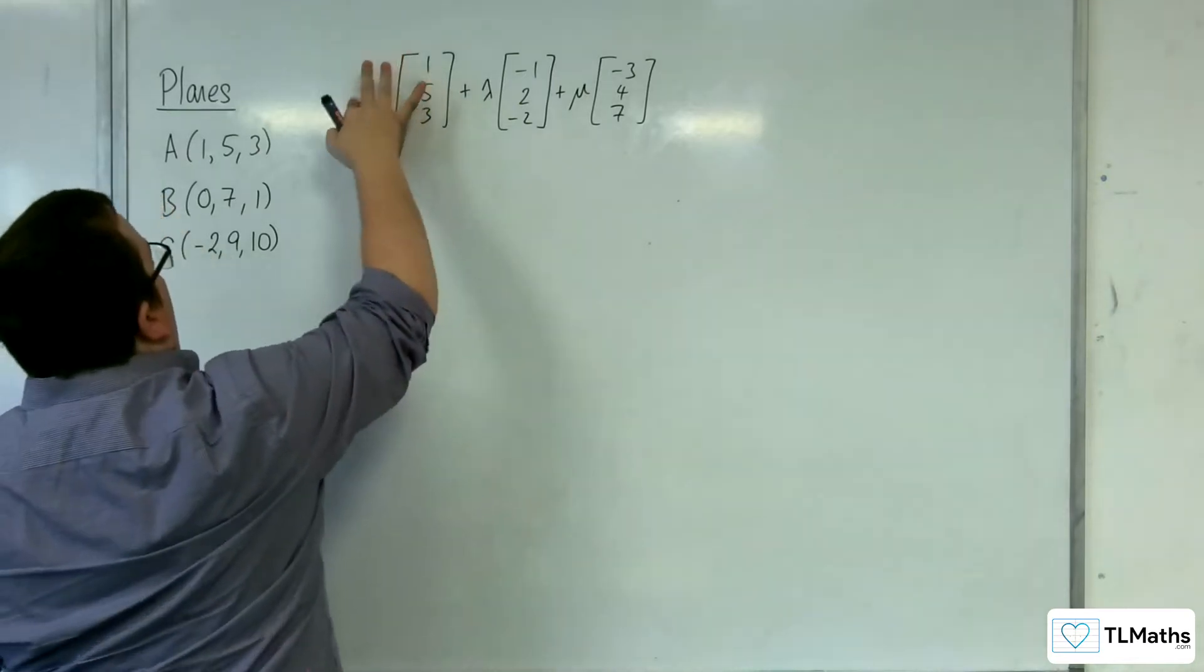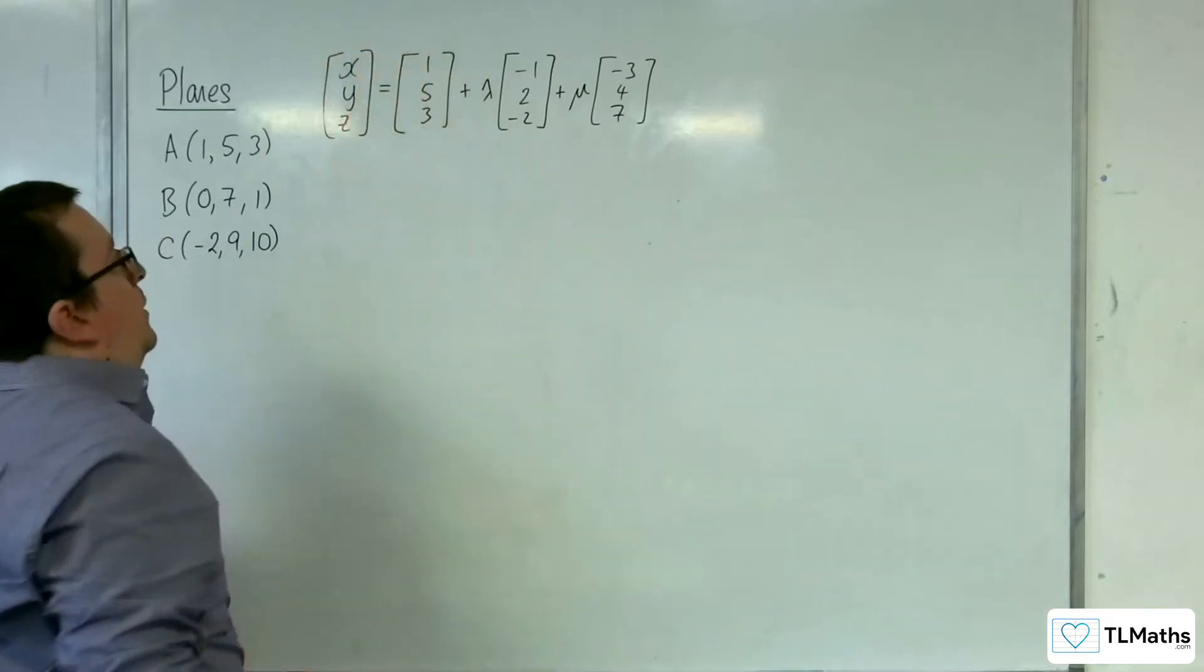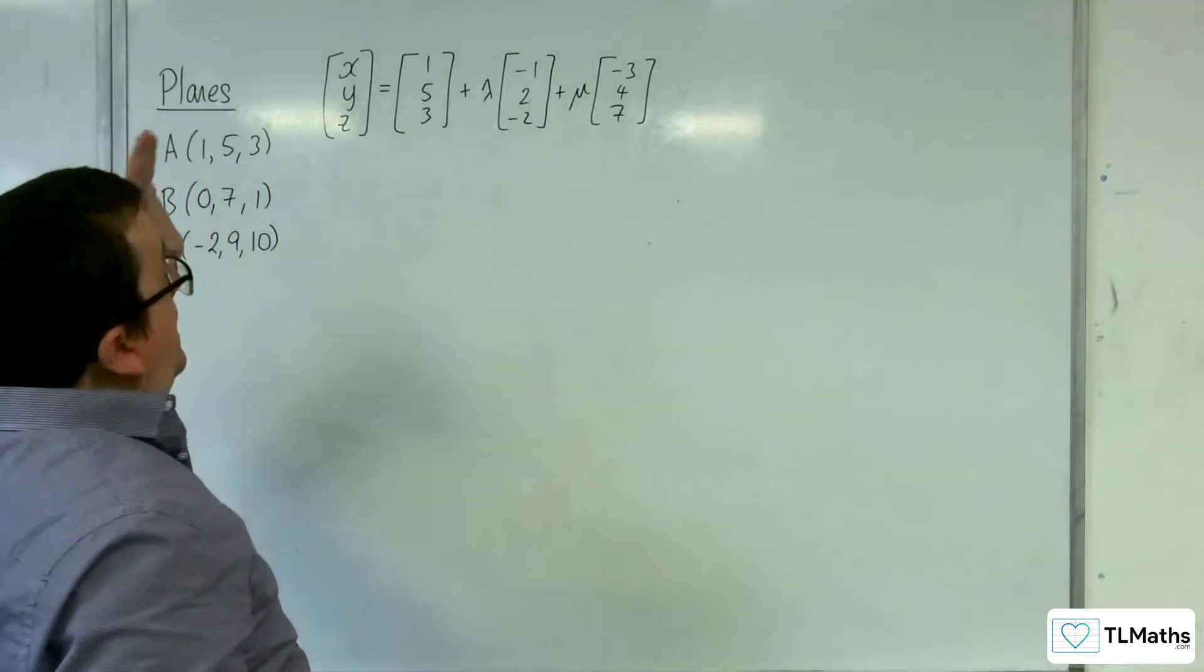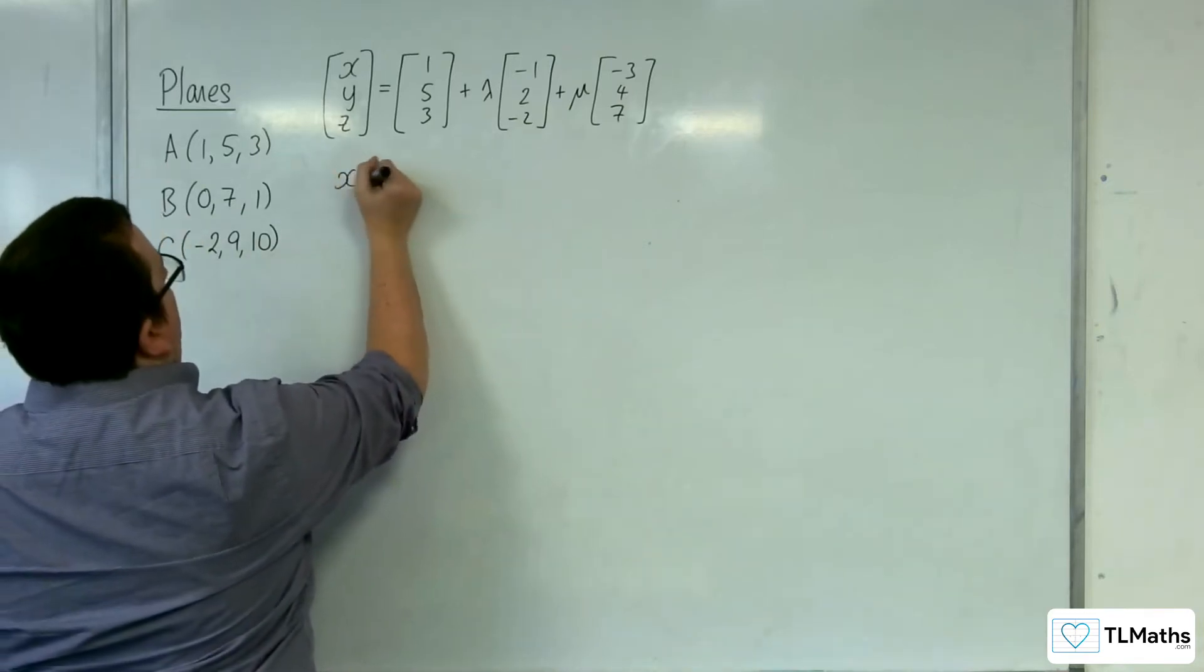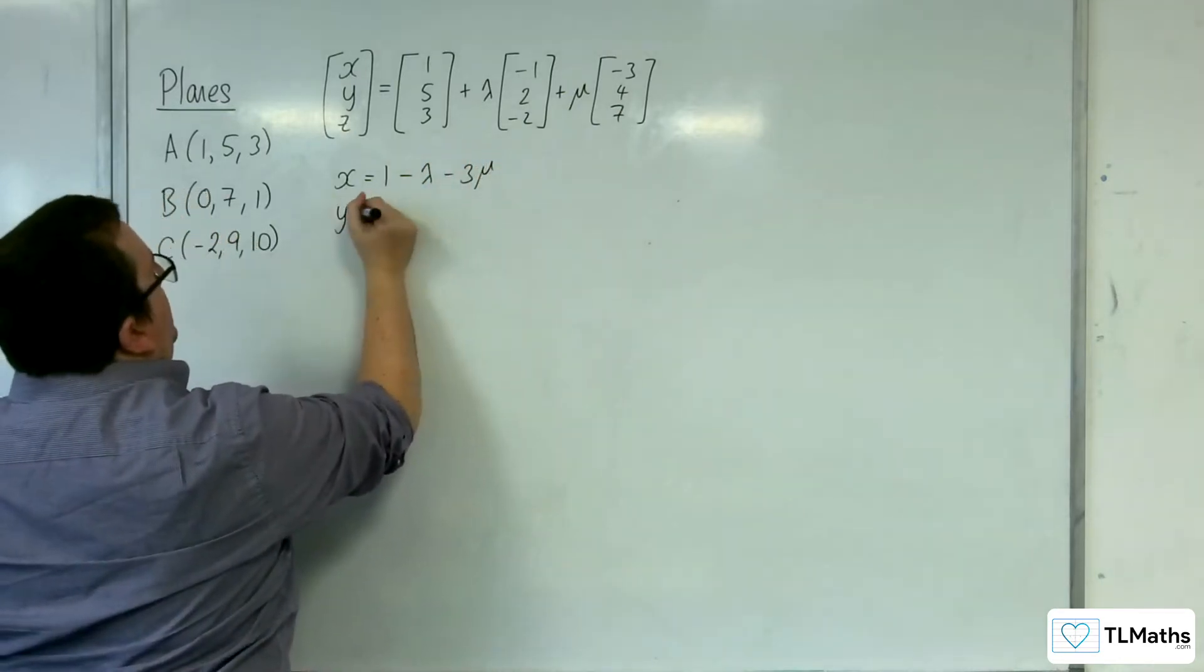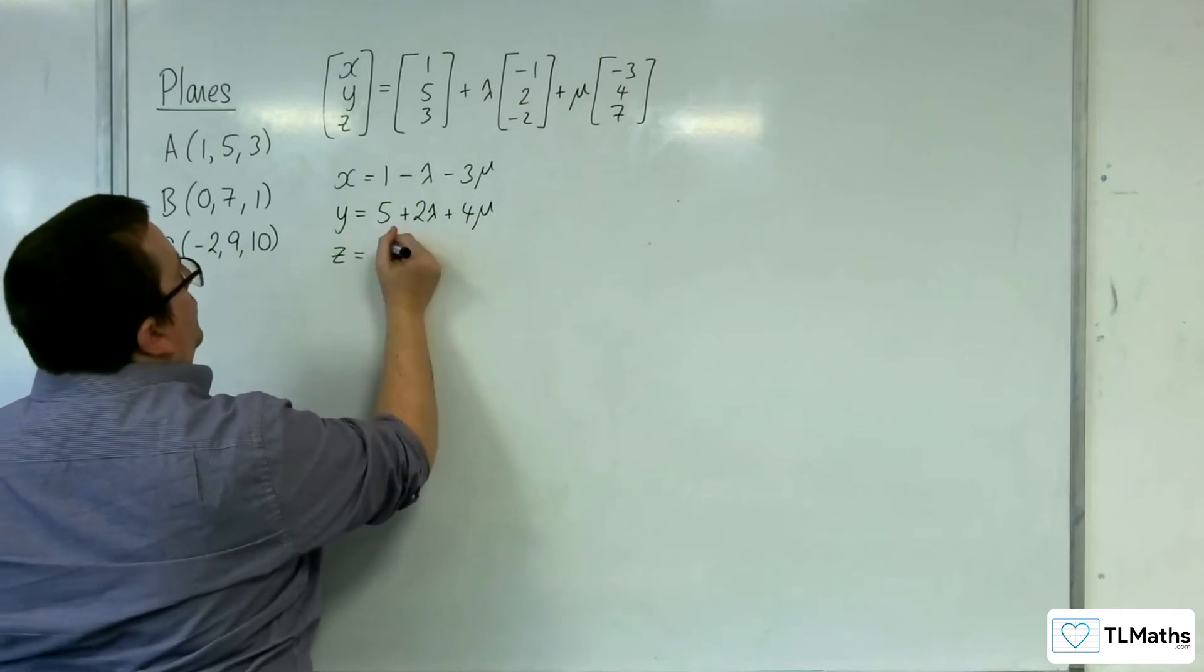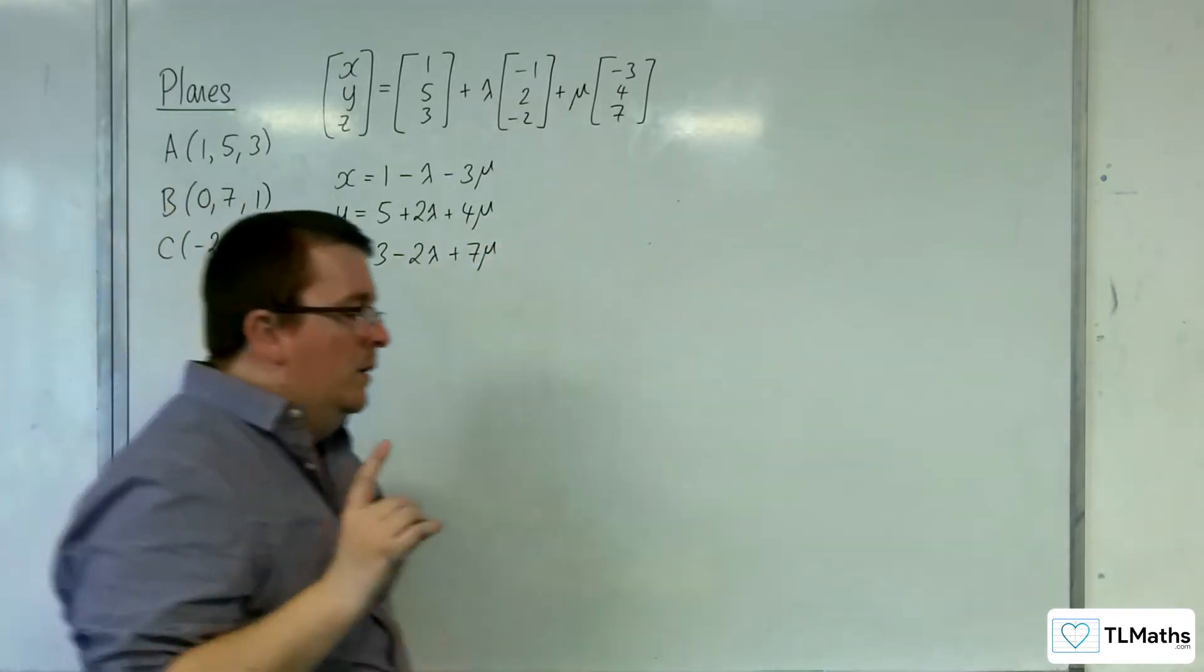Now, we know that R is (x, y, z) because R represents any position vector of a point on the plane. So that means we've got a top row, a middle row, a bottom row. So we have x equals 1 take away lambda take away 3 mu. We've got y is equal to 5 plus 2 lambda plus 4 mu. And then we've got z is equal to 3, take away 2 lambda plus 7 mu.